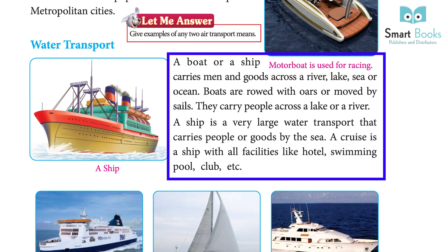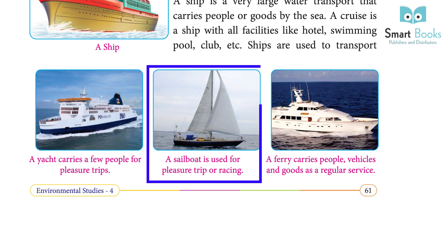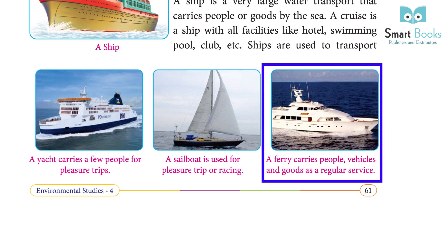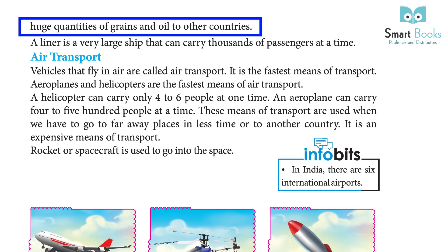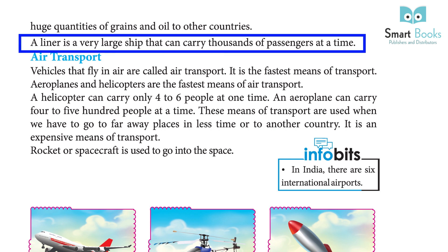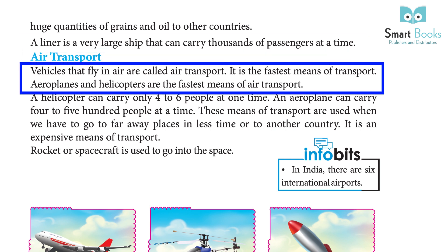A cruise is a ship with all facilities like a hotel, swimming pool, club, etc. A yacht carries a few people for pleasure trips. A sailboat is used for pleasure trips or racing. A ferry carries people, vehicles, and goods as a regular service. Ships are used to transport huge quantities of grains and oil to other countries.